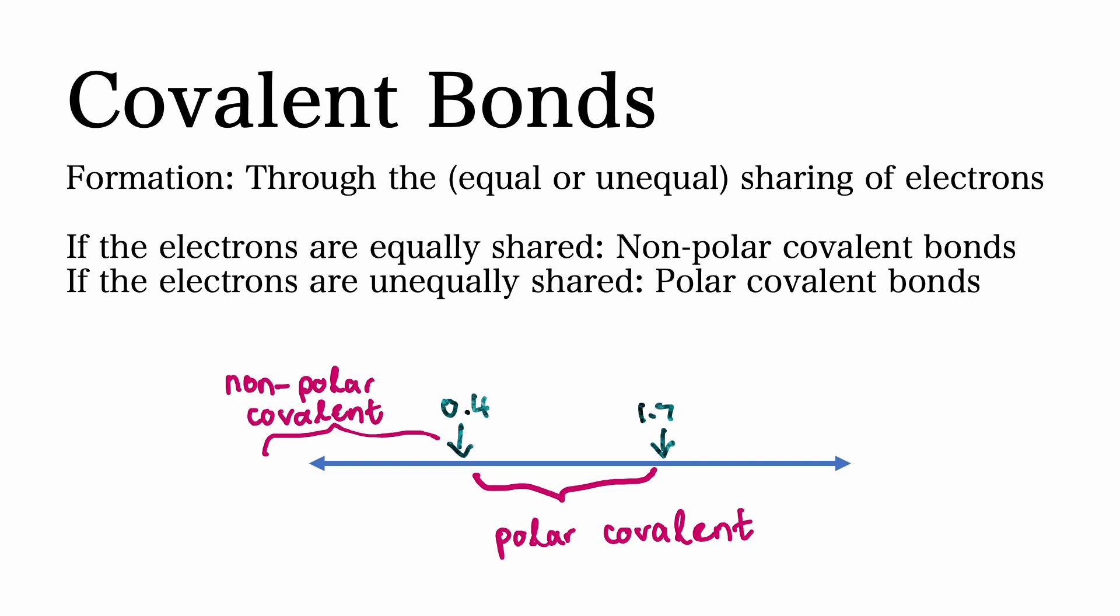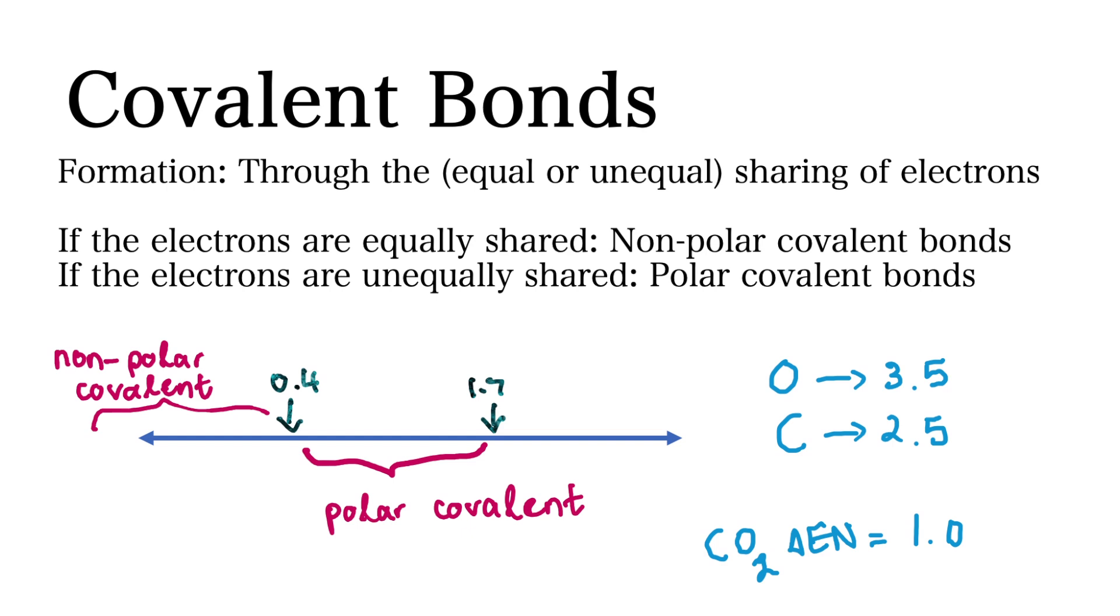Polar covalent bonds have an unequal sharing of electrons, and the electronegativity difference between the atoms is between 0.4 and 1.7 on the Pauling scale. For example, carbon dioxide has an electronegativity difference of 1.